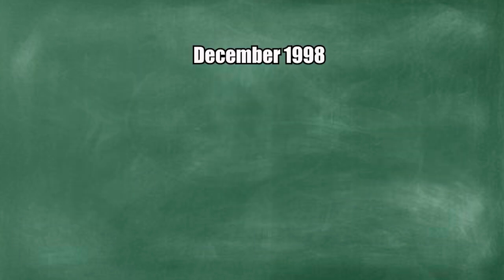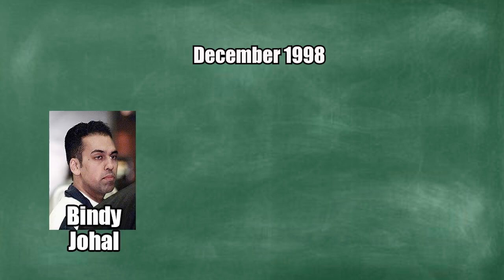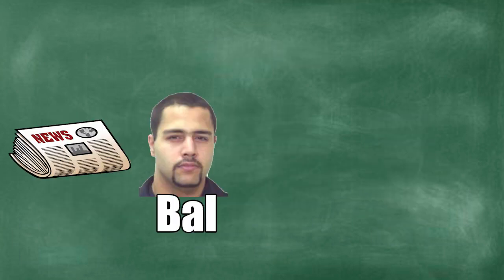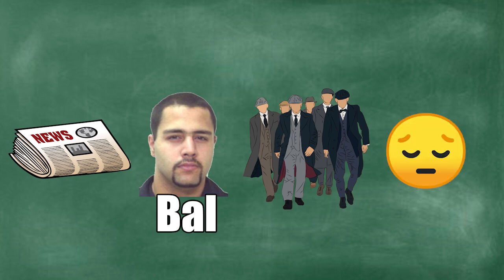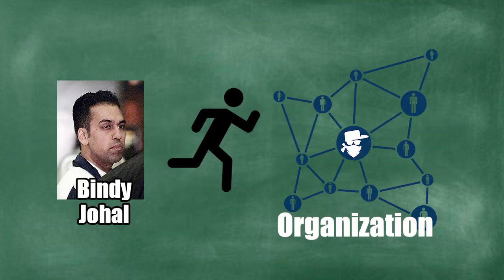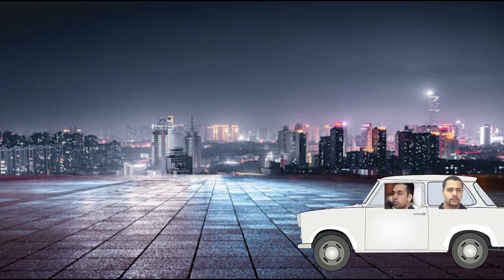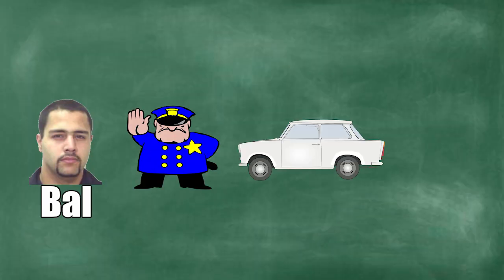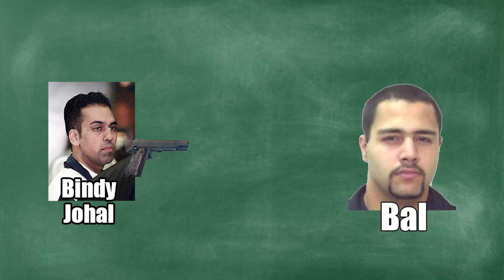Just a few days later, in December 1998, Johal seemed to have decided it was time to get rid of Bal. There was news that Bal, together with other members, were unhappy with how Bindi ran the organization, and this didn't sit well with Bindi. On that fateful night, Johal and Bal were driving to a nightclub when suddenly, Johal took an illegal turn. Luckily for Bal, the police pulled them over because of the sudden turn. Johal pulled out a gun and ordered Bal to take the fall and admit the gun was his.